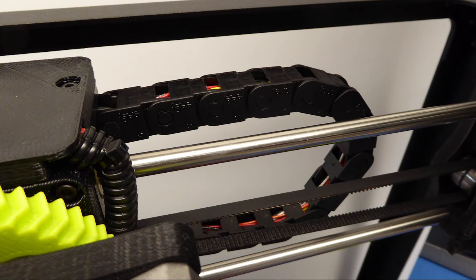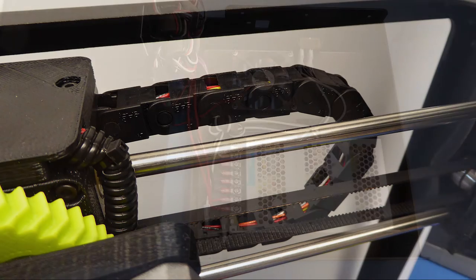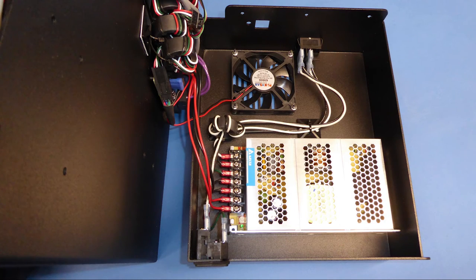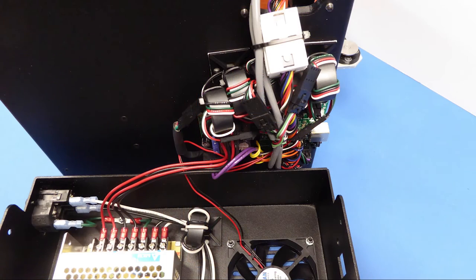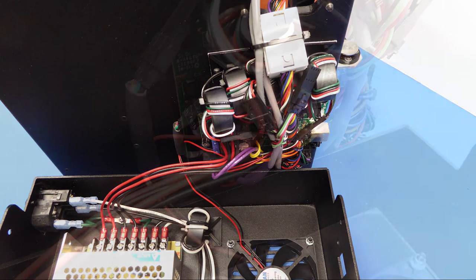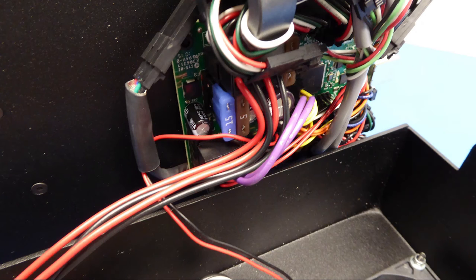Over here we've got the drag chain for cabling, and here we have a Delta power supply rated 150 watts, got the fan, and we have a Mini Rambo controller board which is behind all those wires. Notice a lot of the ferrite cores there for noise suppression, and the Rambo board also has replaceable fuses, and that can be very handy.